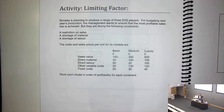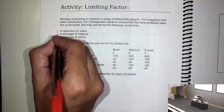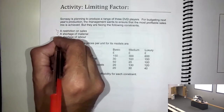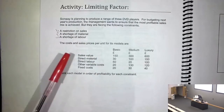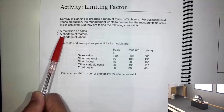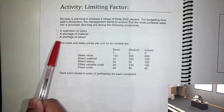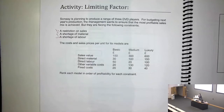You can have limited material, you can have limited labor, you can have limited sales — that's multiple factors. Let's call them one, two, and three, rather than all three together: a restriction on sales, or a shortage of material, and/or a shortage of labor — one by one.